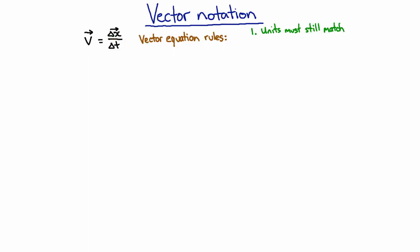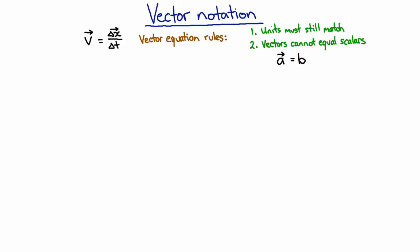The second rule is you can't have a vector equaling a scalar. So if I had some vector quantity 'a' and said that's just equal to 'b', you'd say, all right, I know how big it is, but what direction is it? There isn't enough information in this equation to figure out what direction 'a' should be, so that's not a valid equation. And in exactly the same way, you can't have a scalar equaling a vector — that's always wrong.